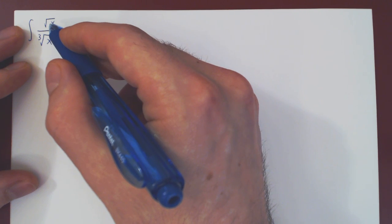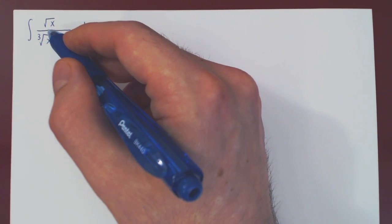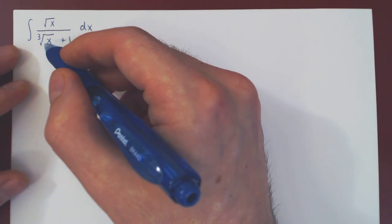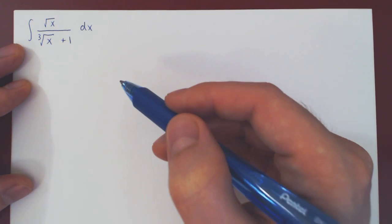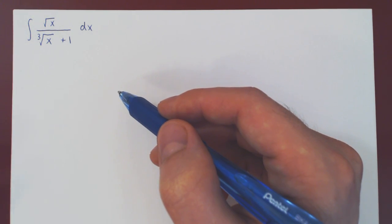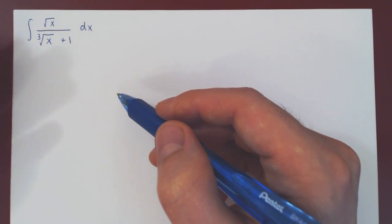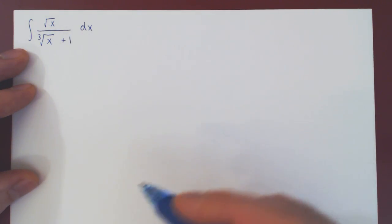So the idea is, well, how do we get rid of a square root? The argument must be a perfect square. How do we get rid of a cube root? The argument must be a perfect cube. Well, which number would give us a perfect square and a perfect cube? This is 2 times 3, 6, as 6 is divisible by 2 and by 3 simultaneously.